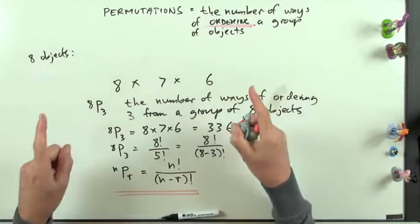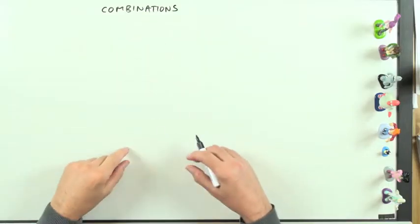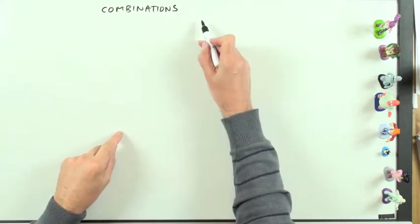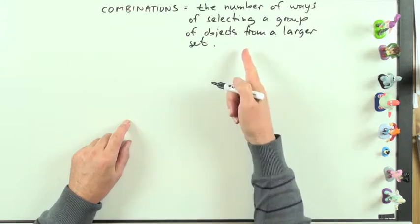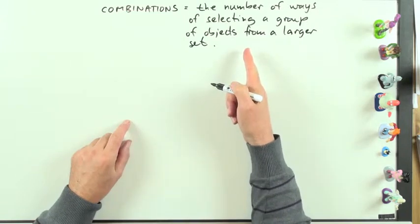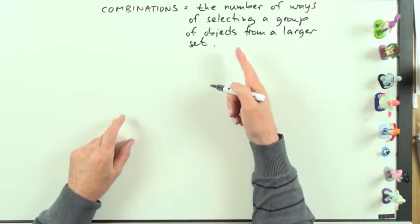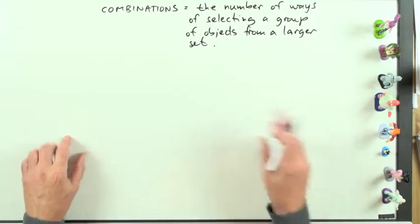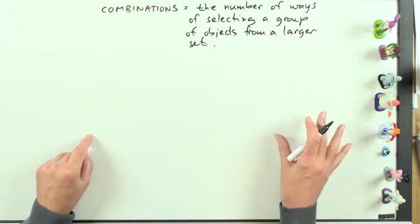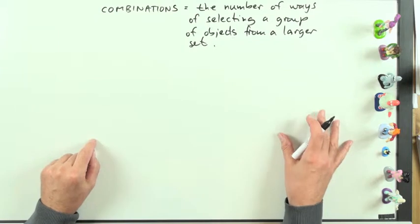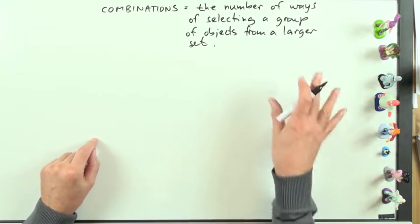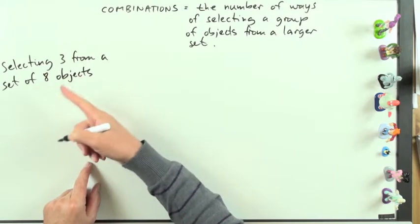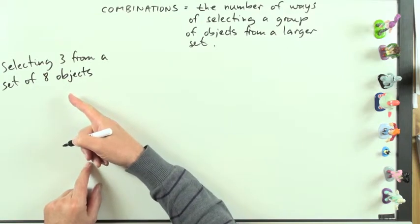That leads to combinations — where the order doesn't matter, and it's just the selection of the three that counts. Combinations are the number of ways of selecting a group of objects from a larger set. So back to this case: eight objects, and we want to select any group of three of them.